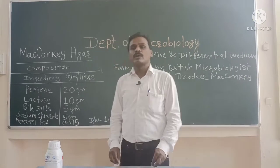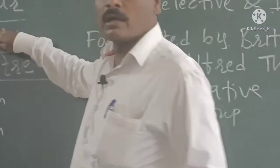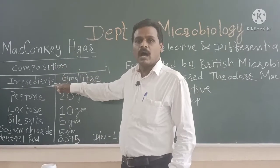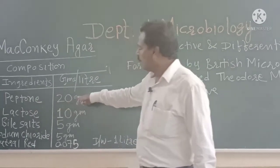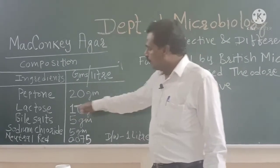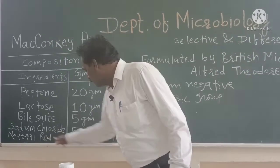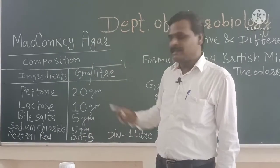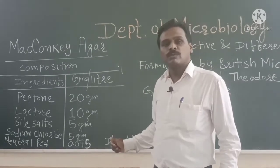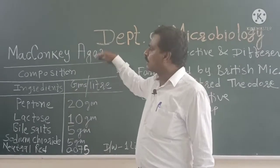Now we will see the composition of MacConkey's Agar. The key components are: peptone 20 grams per litre, lactose 10 grams per litre, bile salts 5 grams per litre, sodium chloride 5 grams per litre, neutral red 0.075 grams per litre, and distilled water 1 litre. The pH of the medium has to be adjusted to 7.1. All these ingredients are used for making the MacConkey's Agar.